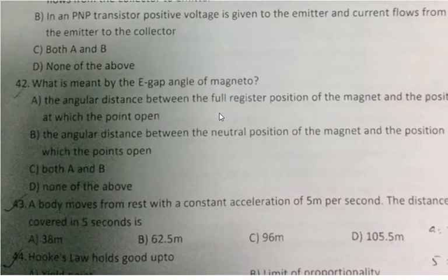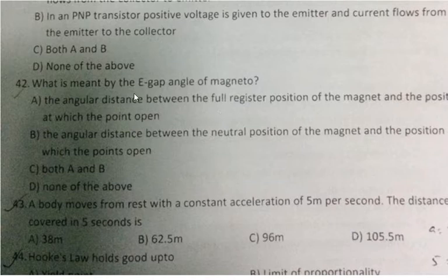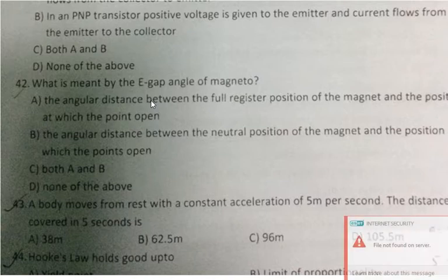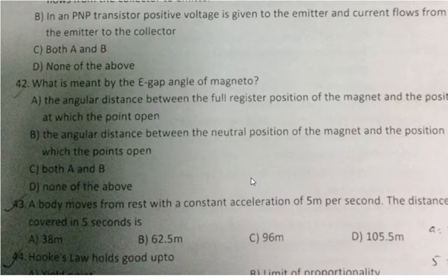Question 42: What is meant by the E-gap angle of magneto? The angle between the full register position of the magnet and the position at which the points open. The answer relates to generated power efficiency.